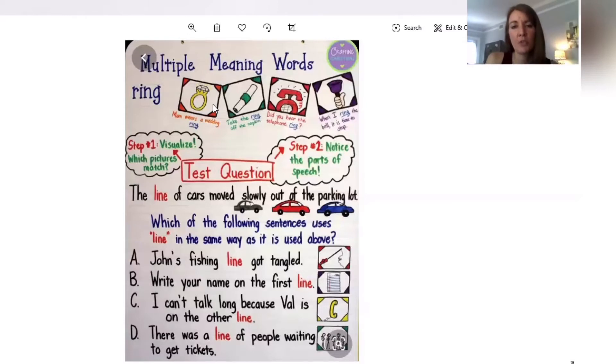The second one says take the ring off the napkin. This is also a noun, it's an object, it's a thing, but it's not a piece of jewelry this time. It is something that is wrapping around a napkin.